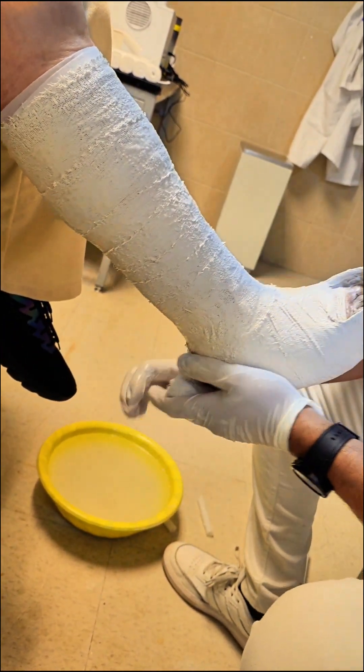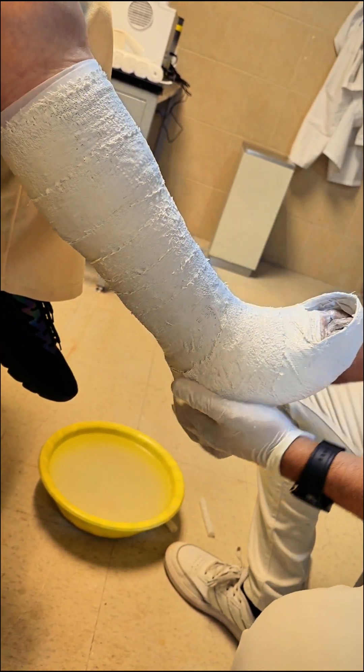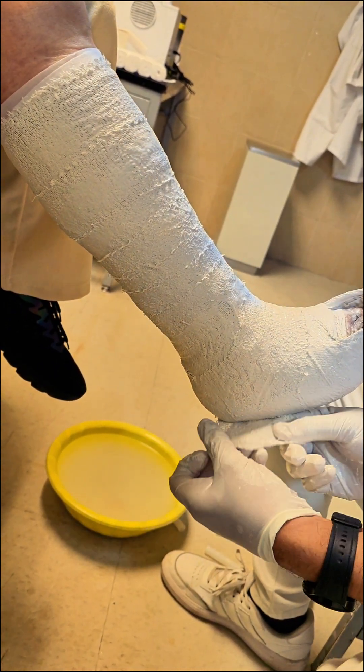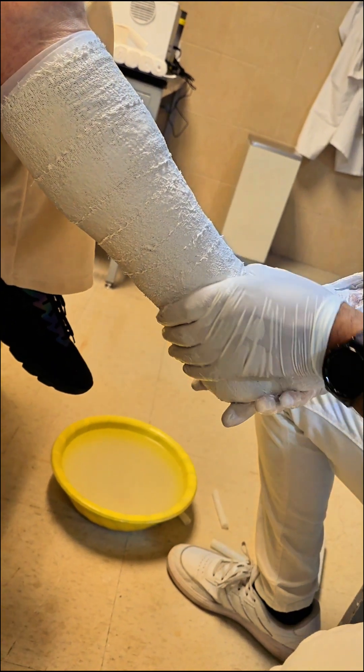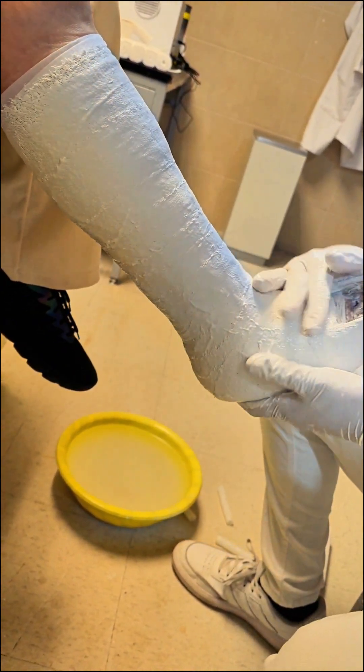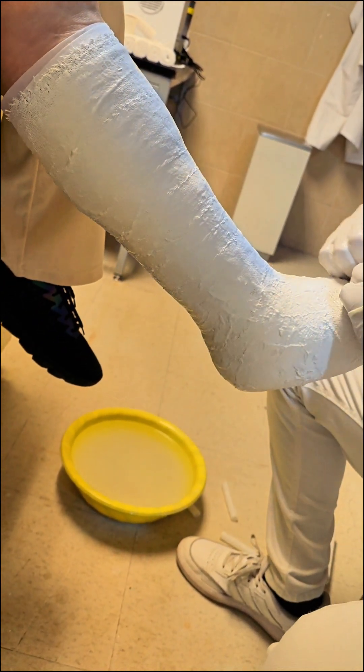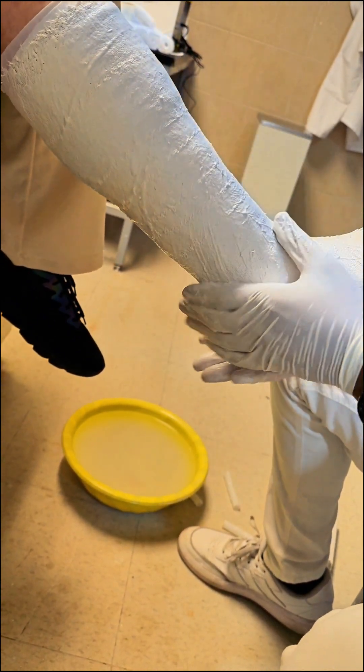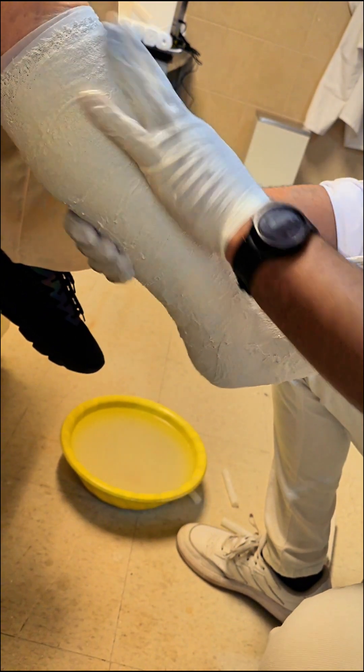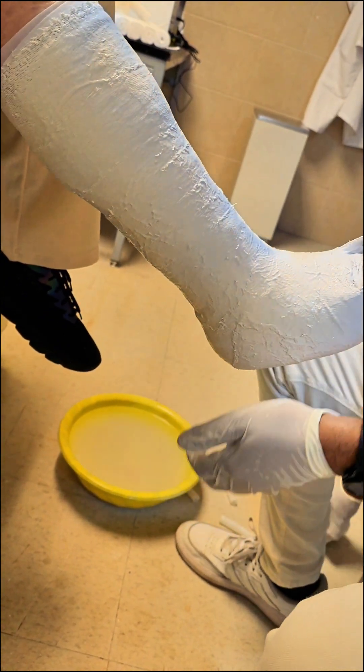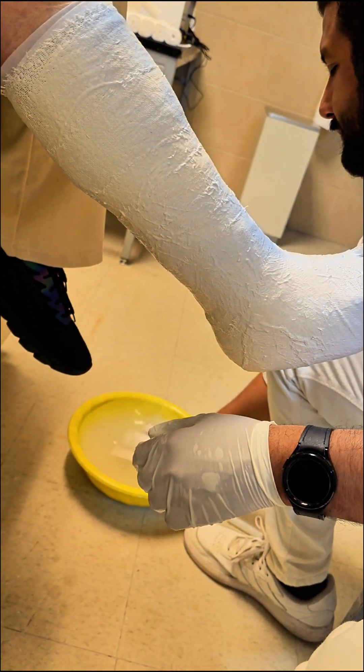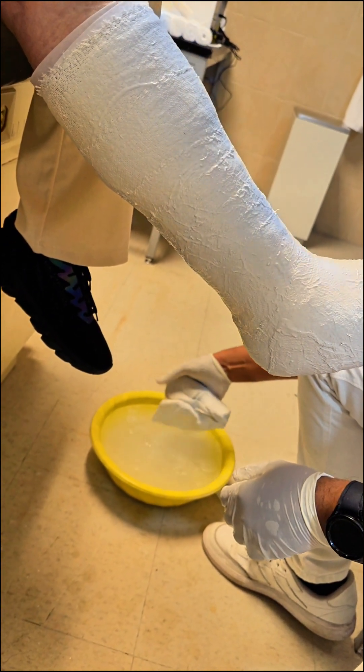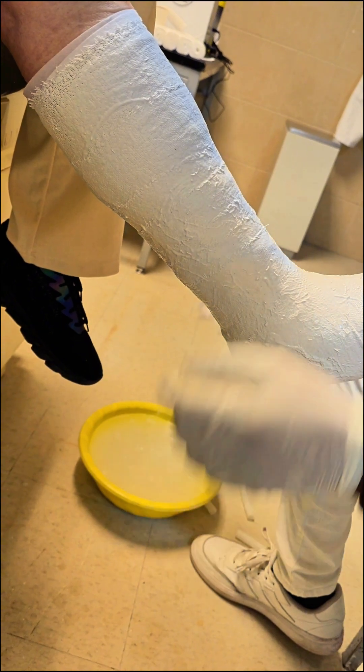The Swedish shoe cast is the most robust of the three, often used for severe fractures that require full immobilization. Here's how you apply it. One: initial positioning. Position the foot at a slightly relaxed angle rather than the strict 90 degrees used in the other casts. This slight relaxation helps accommodate swelling and ensures comfort. Two: padding. Because this cast is more restrictive, generous padding is crucial. Pay extra attention to the heel, ankle, and lower leg to prevent pressure sores.